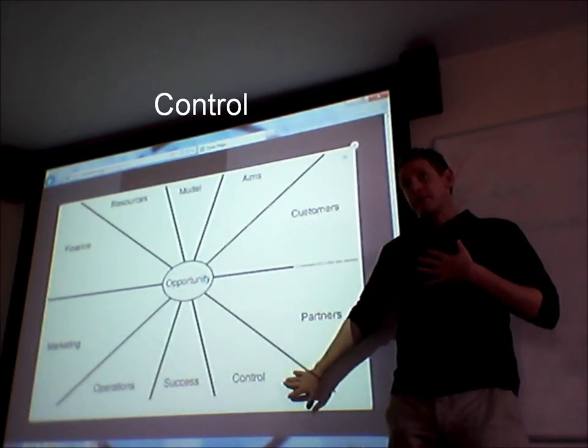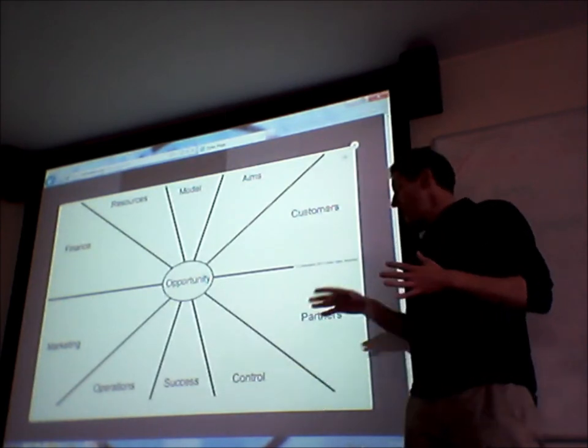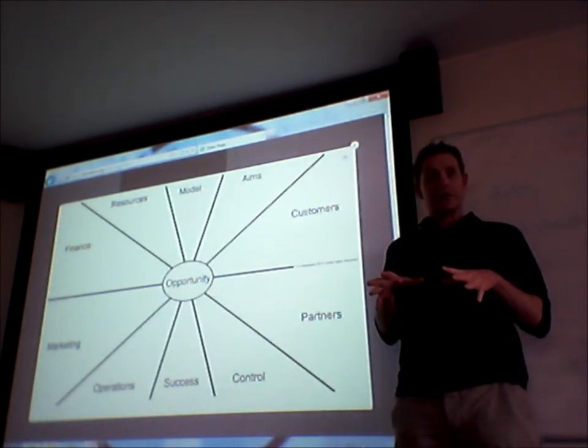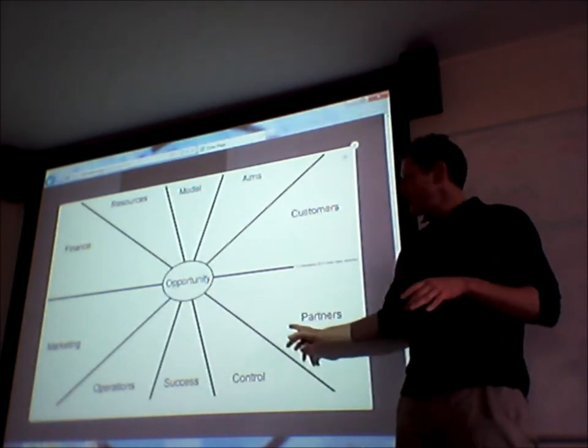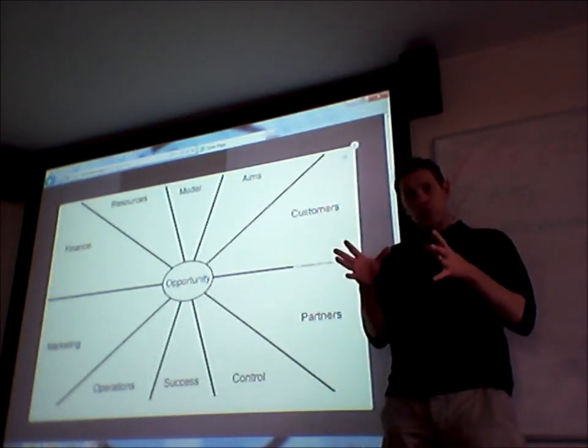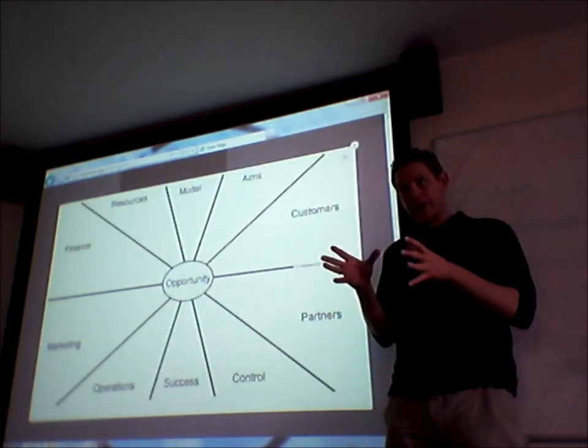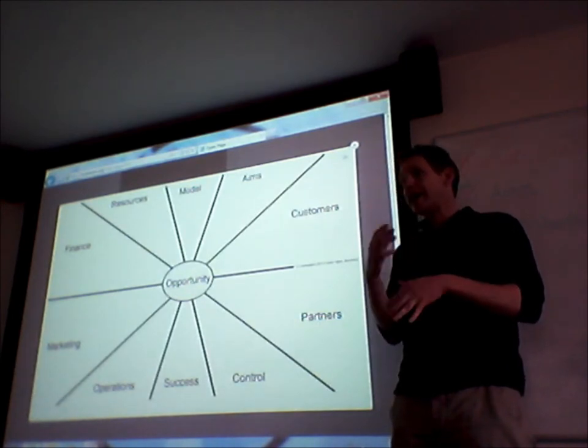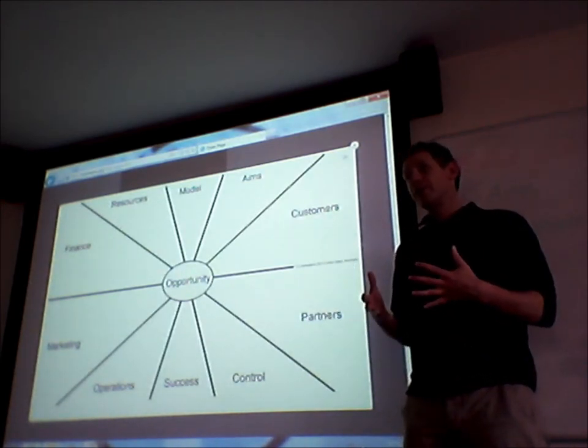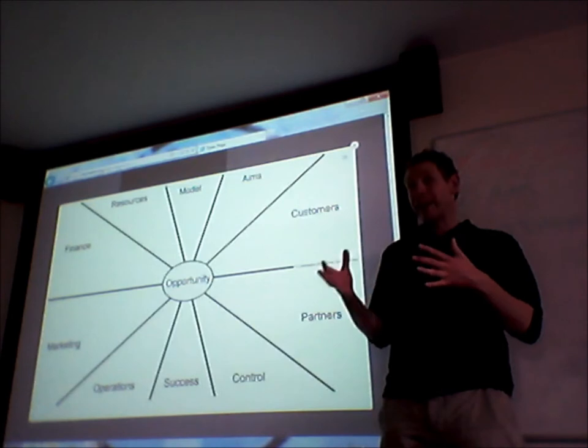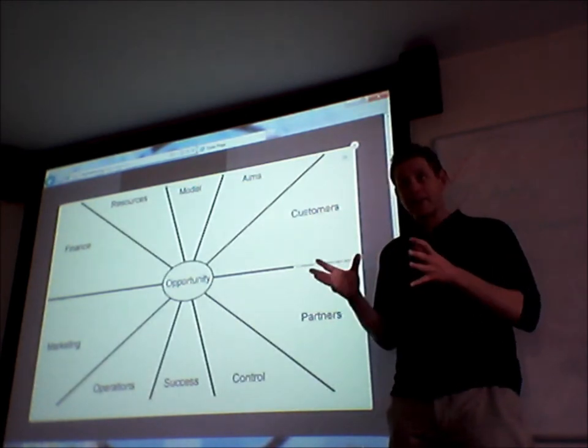Control, for me, this is the most boring part as I've said before. Control is about controlling the organization. It links in really with success. Control is about controlling it. How are you going to keep an eye on your cash flow, on supplies, etc., within the organization? And how often and how regularly are you going to check these controls?